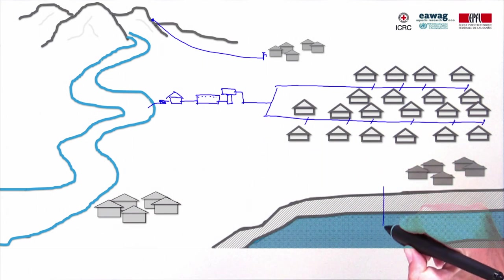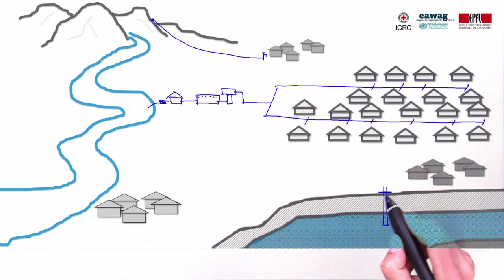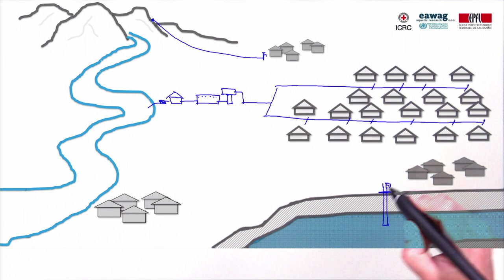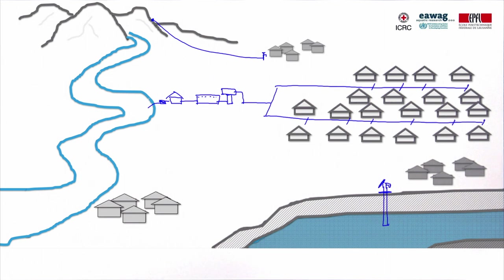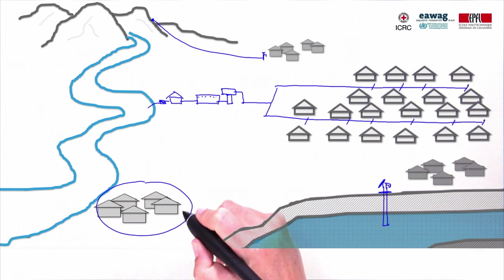In the village further down the valley, people collect water at the protected well with a hand pump. They carry water in jerry cans home. A local NGO has distributed household filters to treat water at home in the village next to the river. A few households also collect rainwater from their roofs and store it in rainwater tanks.